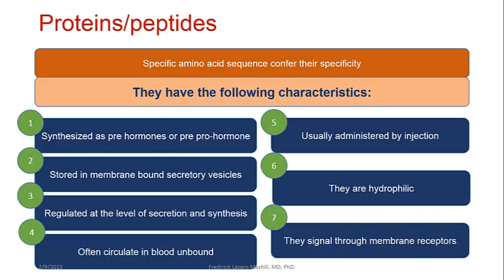Characteristic seven: they signal through membrane receptors. This is important and there is a reason for it. Simply because they are water-soluble, they are not lipid-soluble, and therefore cannot cross the plasma membrane. Since they cannot cross the plasma membrane, they need receptors on the plasma membrane for their effect to be transmitted into the cells.